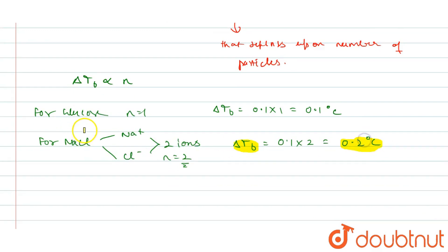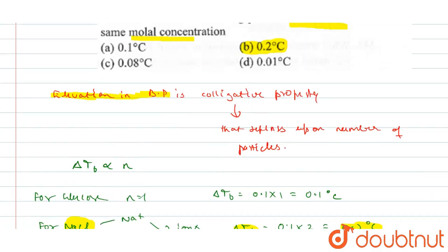So the delta Tb for NaCl is 0.2 degrees centigrade. This is for our NaCl. If we ask for NaCl, then which option can be correct? Option B — 0.2 degree centigrade.